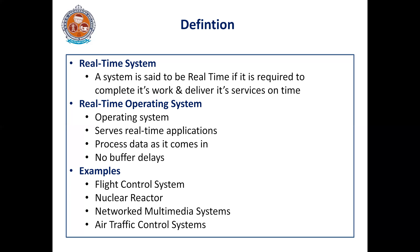Previously we have discussed about round-robin, round-robin with interrupts, and also function queue scheduling architectures. Whenever we are comparing this real-time operating system architecture with others, each and every architecture has certain limitations. This real-time operating system architecture has overcome all those limitations.